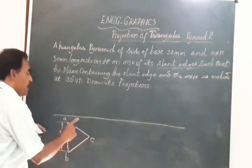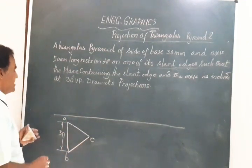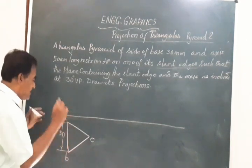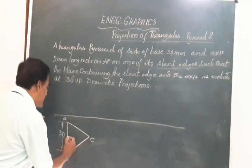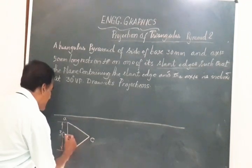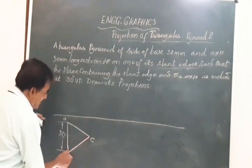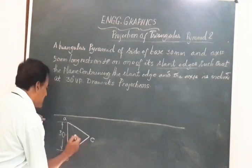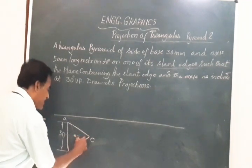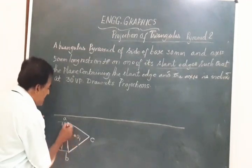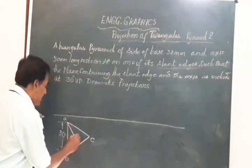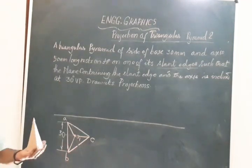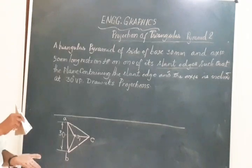Now we have to locate the centroid of the object. Bisect any two adjacent sides of the solid — I am going to bisect side AB and bisect side BC. These two bisectors meet at a common point which I call O1. Join O1 to all the corners: O1 to A, O1 to B, and O1 to C. This is the top view of the pyramid when it is resting on its base on HP. Whenever any solid — prism, pyramid, cylinder, or cone — rests on HP, the axis of the solid is always perpendicular to HP.